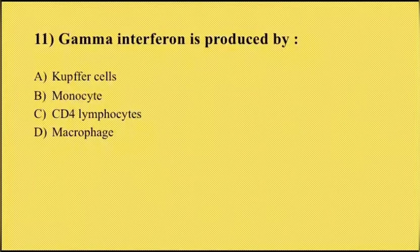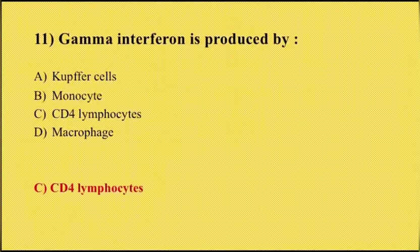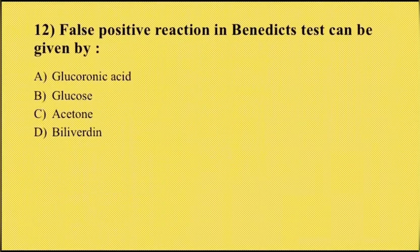Eleventh question: gamma interferon is produced by option A Kupffer cells, option B monocytes, option C CD4 lymphocytes, option D macrophages. The answer is option C, CD4 lymphocytes. Gamma interferon is a dimerized soluble cytokine and the only member of the type 2 class of interferons. Kupffer cells, monocytes, and macrophages produce inflammatory cytokines. Kupffer cells are liver macrophages.